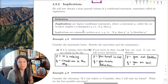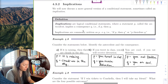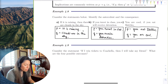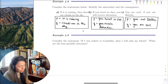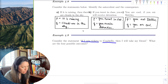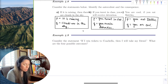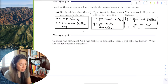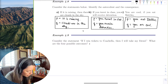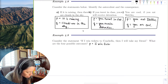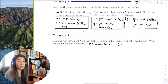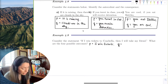So here's our main example: 'If I win tickets to Coachella, I will take my friend.' The antecedent P is 'I win tickets to Coachella,' and the consequence Q is 'I take my friend.'